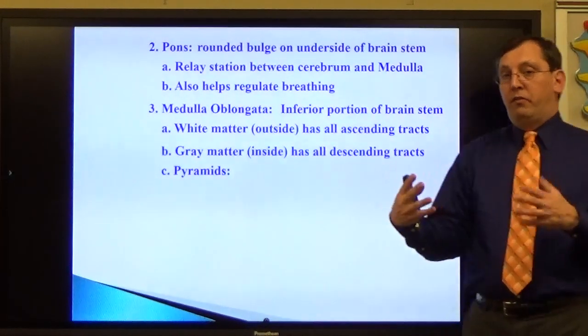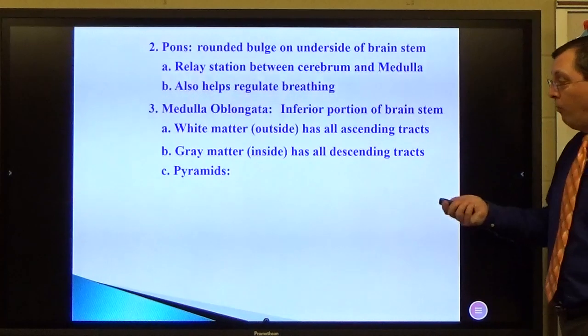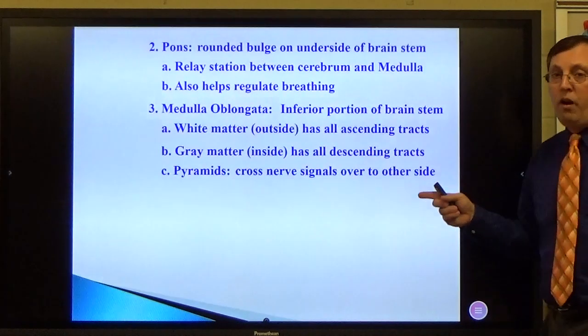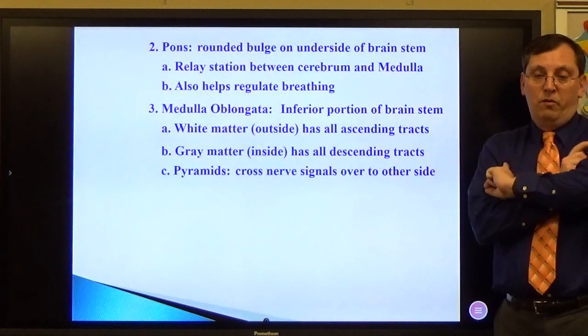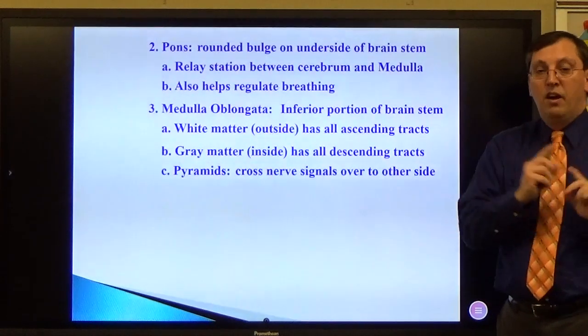It has pyramid cells in it, or pyramidal cells in it. These are lower motor neurons. These are where I cross over signals between the right and the left side. So the signals come down here, they cross over to here, and here, they cross over to here, and do that.